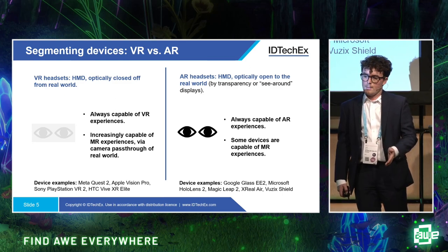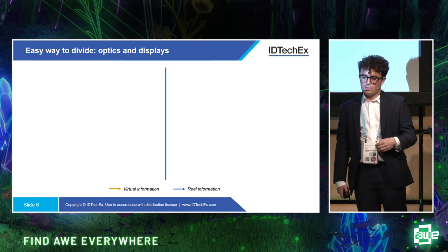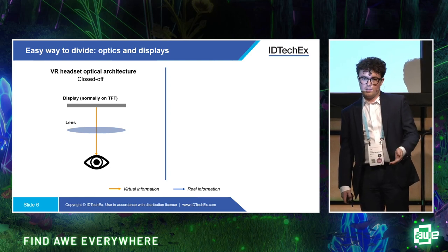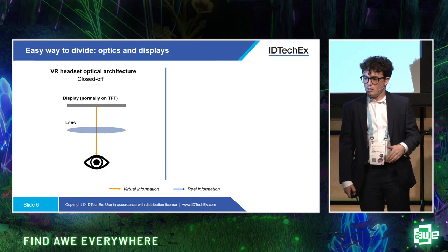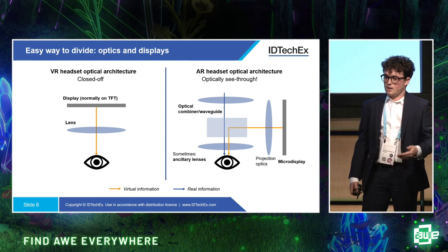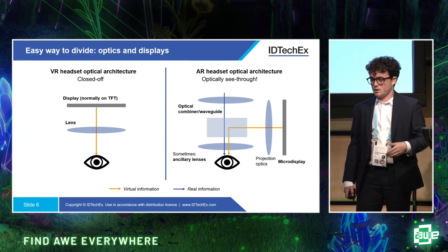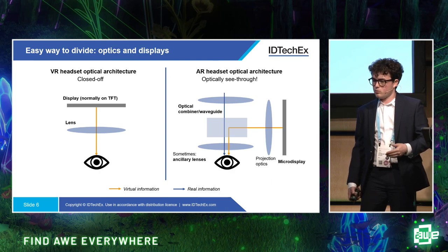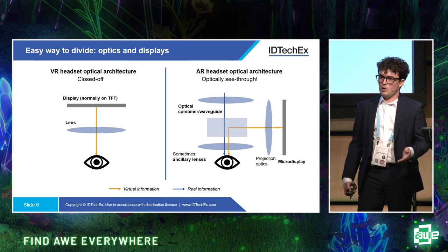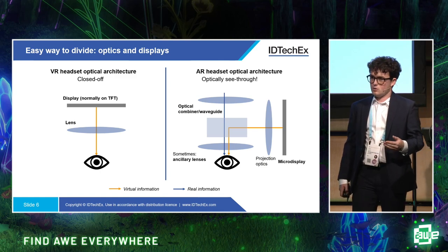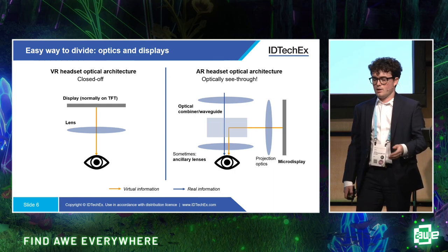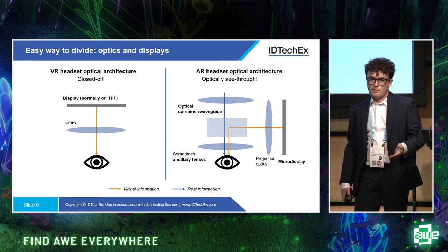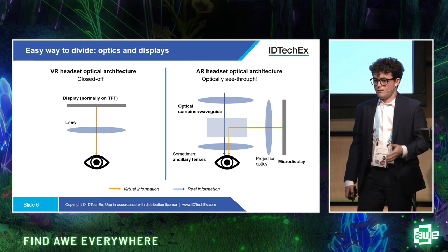The key distinction between AR and VR devices comes down to the optics and display system. In VR, we typically have a display before the eye with a lens system to magnify and focus it to a comfortable distance. In AR, the architecture is more complex: we have display systems, collimation optics, projection optics, and the critical component — the waveguide or optical combiner — which overlays virtual information on top of the real world. We'll often also have ancillary lenses to change the focal distance and correct for eyewear prescriptions.